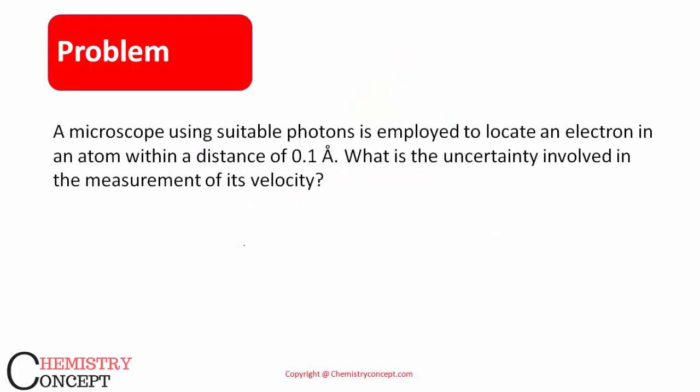Let's solve a problem. A microscope using a suitable photon is employed to locate an electron in an atom within a distance of 0.1 angstrom. What is uncertainty in measurement of velocity? When it is written that within a distance of 0.1 angstrom, that means the uncertainty, that means del x is 0.1 angstrom. We have to find out del v.